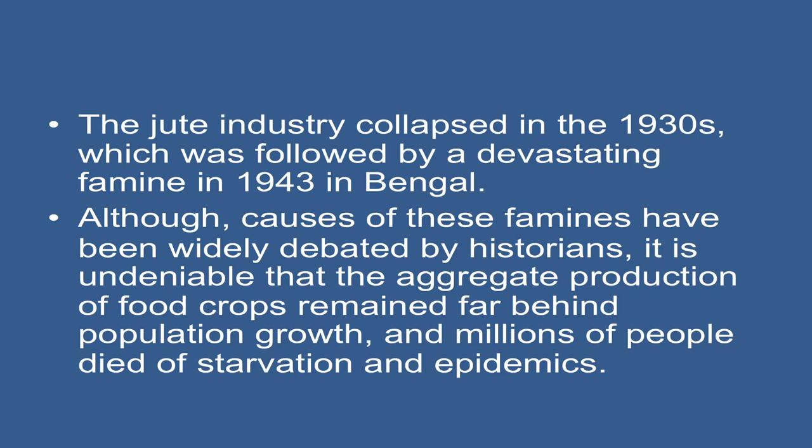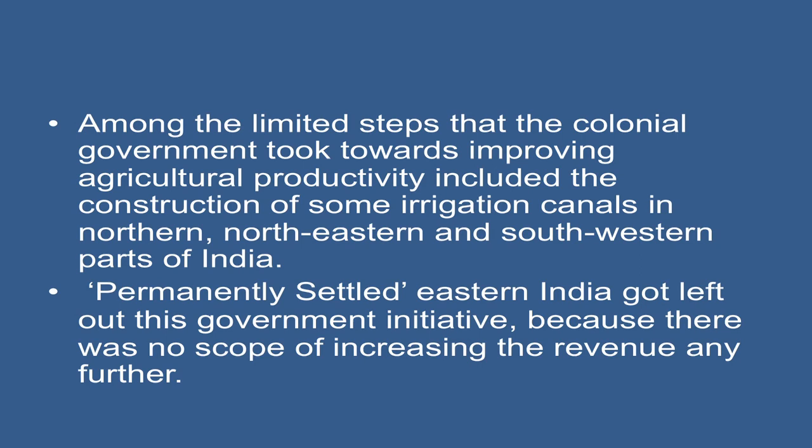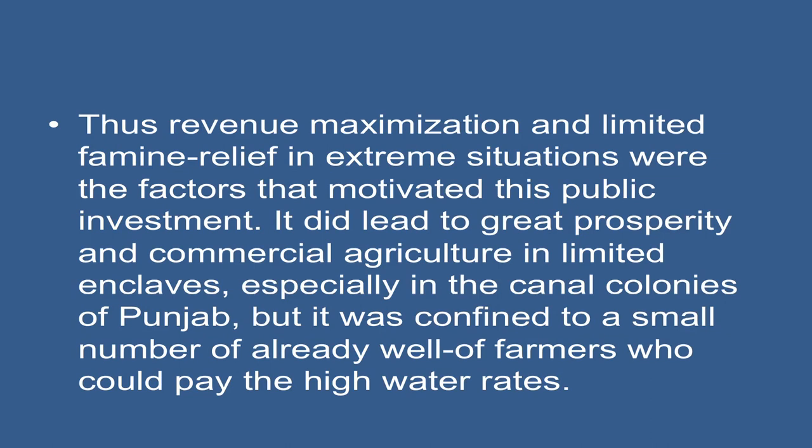Although these famines have been widely debated by historians, it is undeniable that the aggregate production of food crops remained far behind population growth and millions of people died of starvation and epidemics. Among the limited steps that the colonial government took towards improving agricultural production included the construction of some irrigation canals in northern, northeastern, and southwestern parts of India. Permanently settled eastern India got left out of the government initiative. Revenue maximization and limited famine relief in extreme situations were the factors that motivated this public investment.